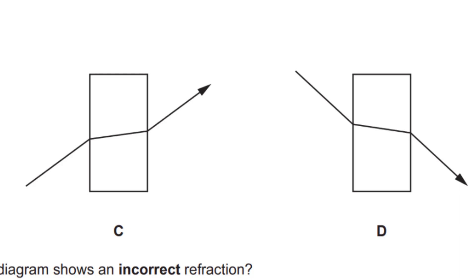the ray will bend towards the normal and away from the normal as it's leaving the block. And C and D are correct.